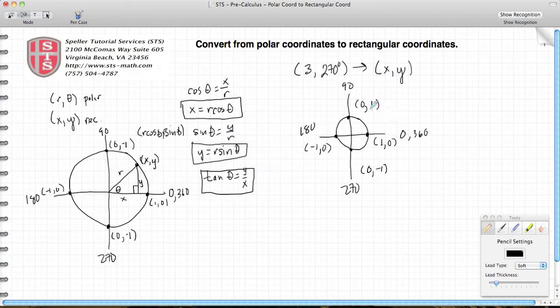For this particular problem, we know that the angle θ is 270 degrees, so that puts us at this point on the y-axis. Let's rewrite: x = r cos θ. We know from the problem that r = 3, and we're taking the cosine of 270 degrees. Cosine corresponds to the x coordinate, and we see at 270 degrees the x coordinate is 0. The cosine of 270 degrees is 0, so 3 times 0 gives us 0.